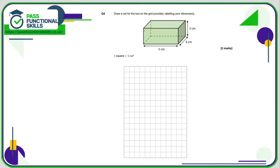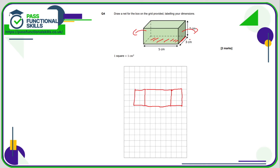Question number four: we need to draw a net for this box. I'm going to start with the base, which is three by five — one, two, three across and one, two, three, four, five down. Now I'm going to fold the left and right sides outward, which are three by two, so there's my two on each side. Then I'll fold the front face down — that's five by two, so there's my five and there's my two.